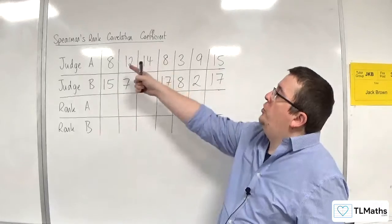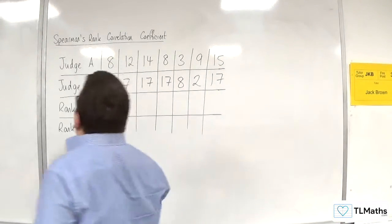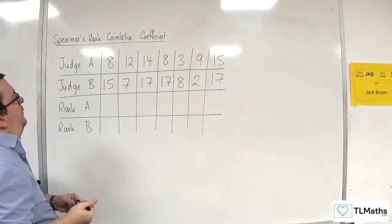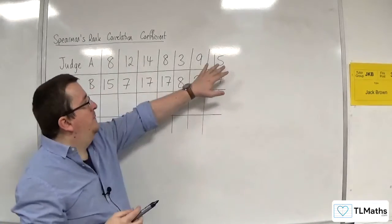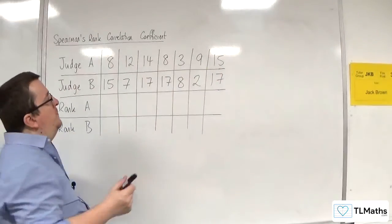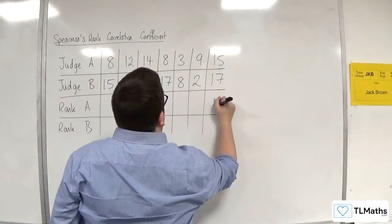Okay, so Judge A, let's start ranking their data, their scores. Let's go with 15 as the highest. We'll go from the highest to the lowest. So, 15 is the highest, so that gets rank 1.